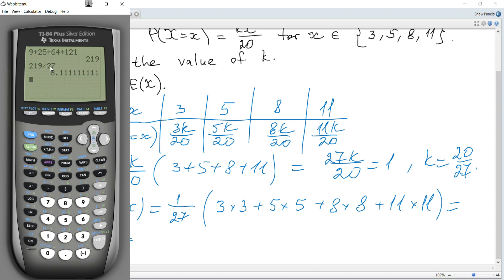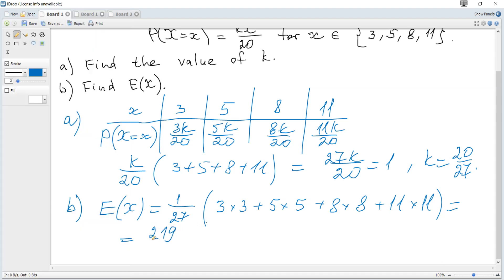And it becomes 219 over 27. It can be simplified. It's 73 over 9 or 8.11 to 3 significant figures.